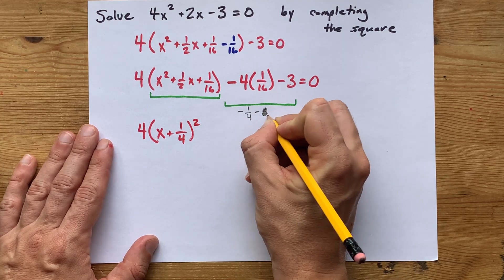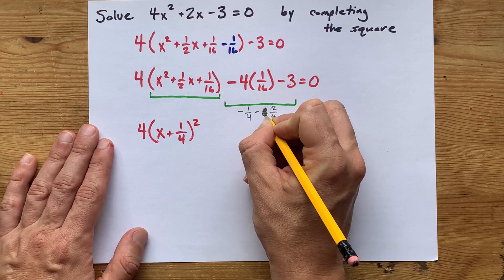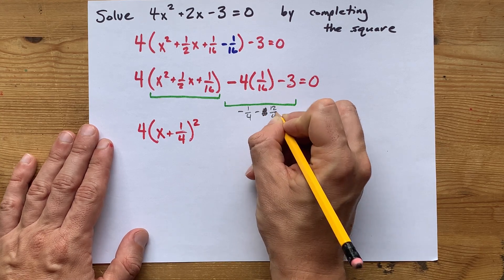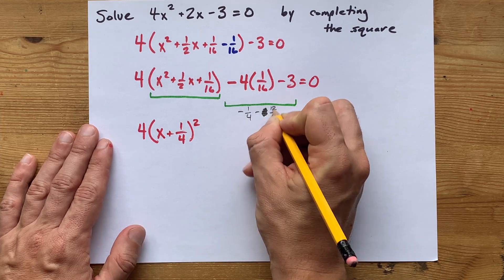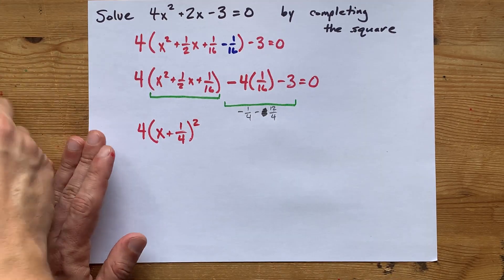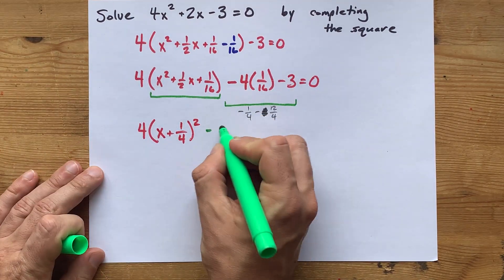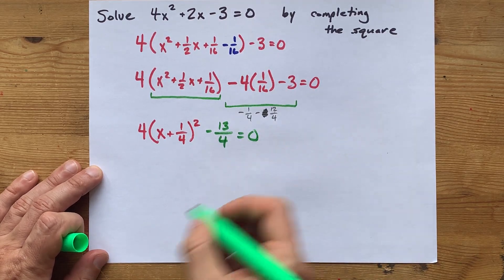I'm going to rewrite that 3 as 12 quarters because a whole number 3 is, well, 3 times 4 gives me 12. 12 divided by 4 gives me 3. So, why don't I just replace 3 with 12 fourths? Negative 1 minus an extra 12. That's going to leave me with minus 13 quarters equals 0.